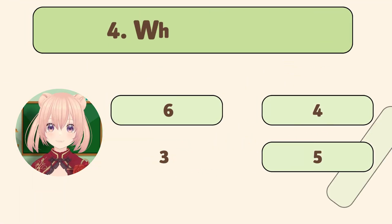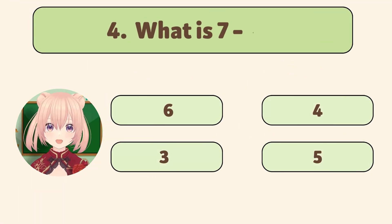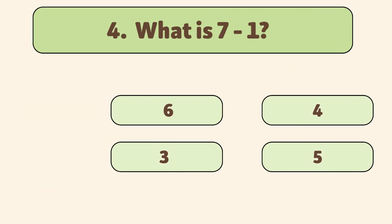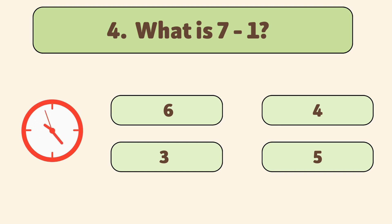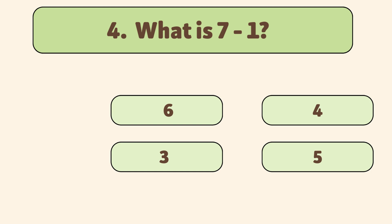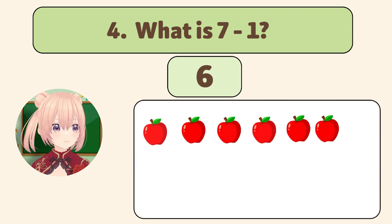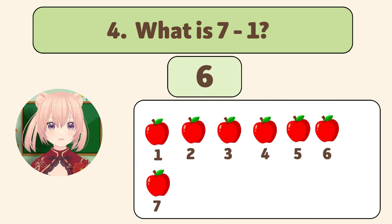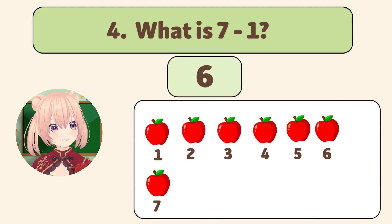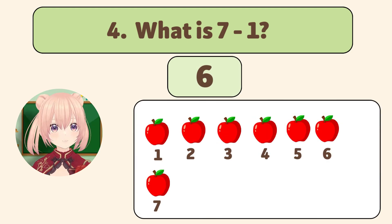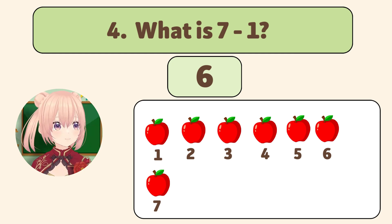What is 7 minus 1? The answer is 6! We start with 7 apples and take away 1. Let's count!